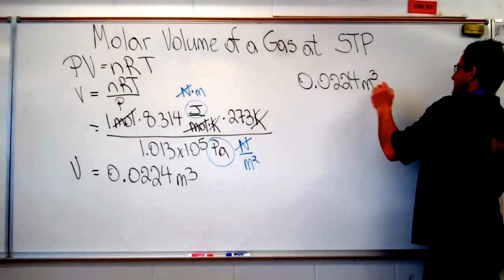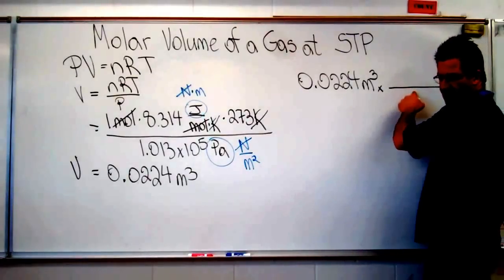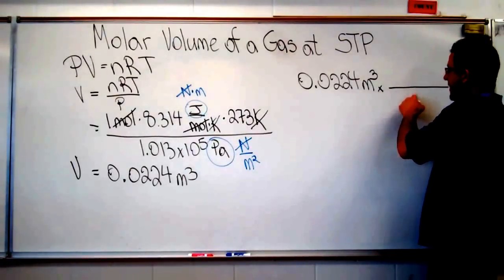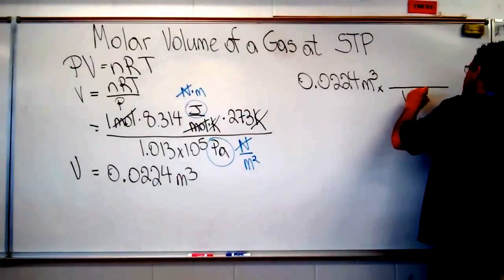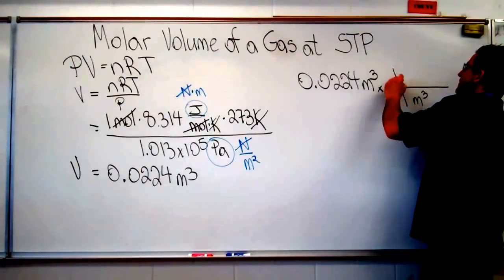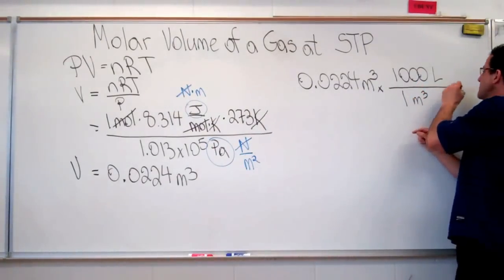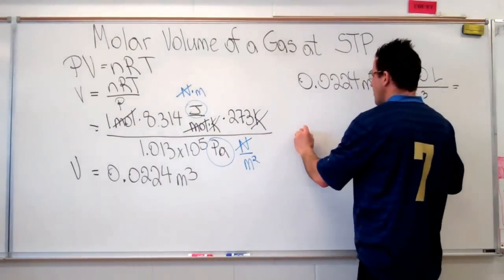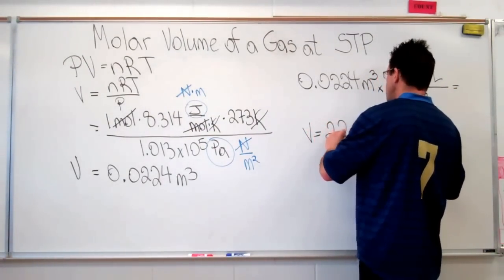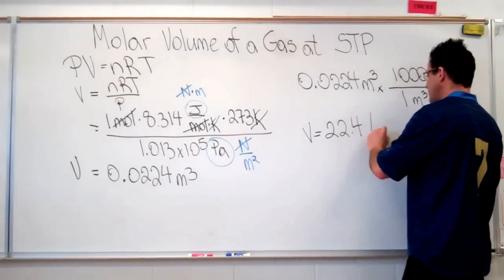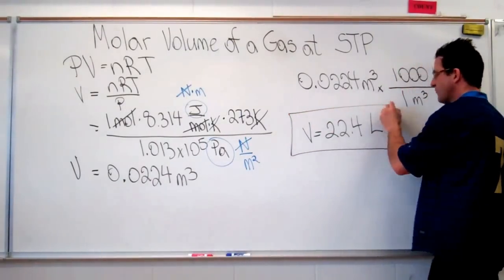So we can put our multiplication, our division, and then we know that we have 1 meter cubed, or 1 cubic meter, is equal to 1,000 liters. And then we come up with our volume being 22.4 liters.